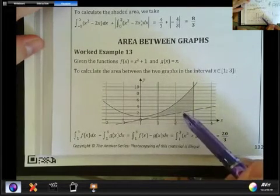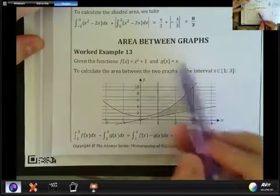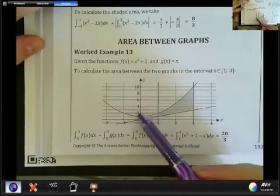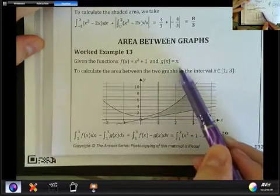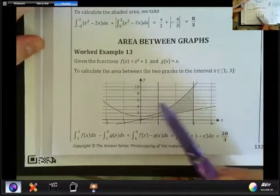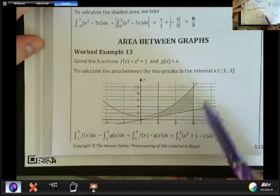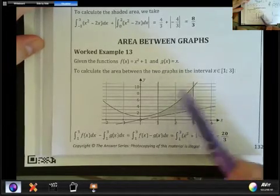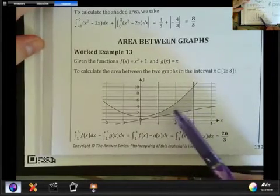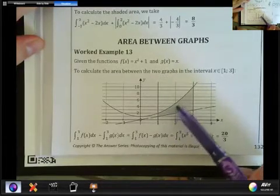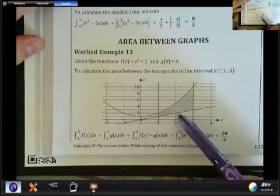So here you could also maybe just do like a rough sketch. If you know x squared plus one, you know that the y-intercept is one and then it's x squared, so it's going up all the way from one. And you know that graph y equals x has a point at one, one, at two, two, at three, three. So you could figure out without actually drawing the graph to scale and properly that the parabola would be higher than the straight line graph.